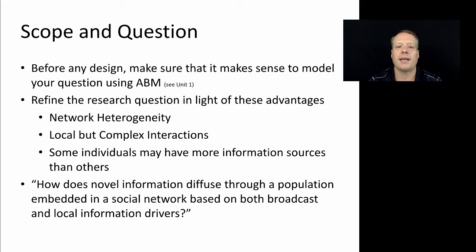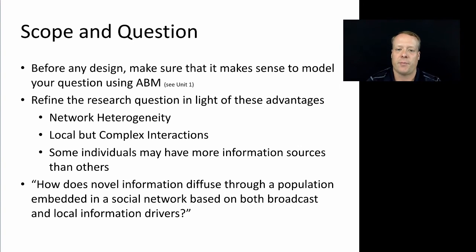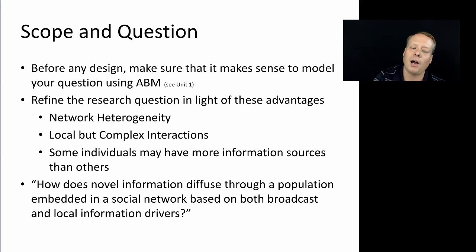It's also the case that the environment is very rich. As a result, some agents may have more information sources than others — they may be hubs, potentially affected by their network structure. So given all that, let's rephrase our original research question to be something along the lines of: how does novel information diffuse through a population embedded in a social network, based on both broadcast and local information drivers.